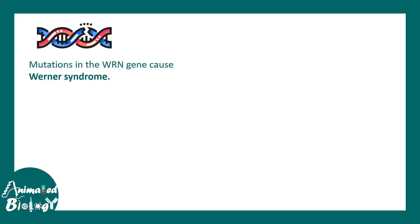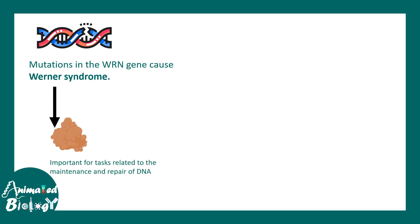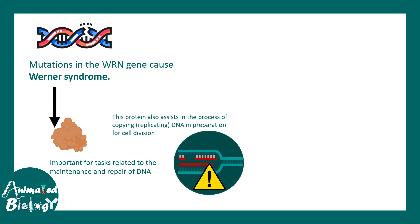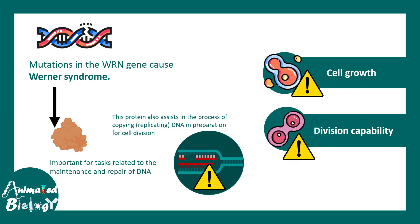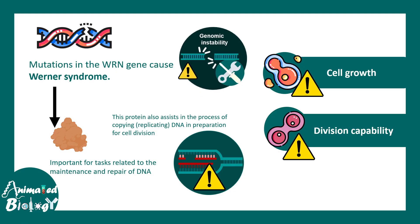Similarly, we can take the example of Werner syndrome. In this case the WRN gene encodes for a protein involved in DNA repair and maintenance. When this protein is absent, DNA replication stalls and the overall repair process is hampered. In these circumstances, cellular growth and division capability is compromised. That is how we understand that genomic instability is a key driver for the cellular aging process.